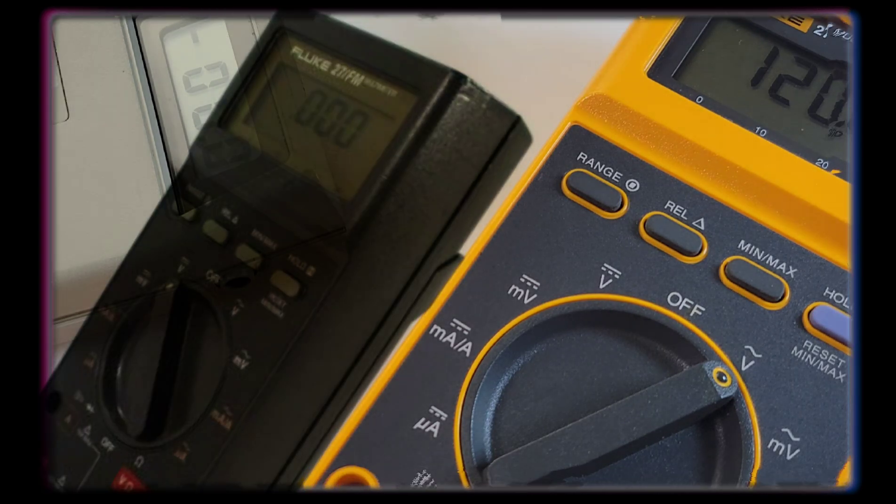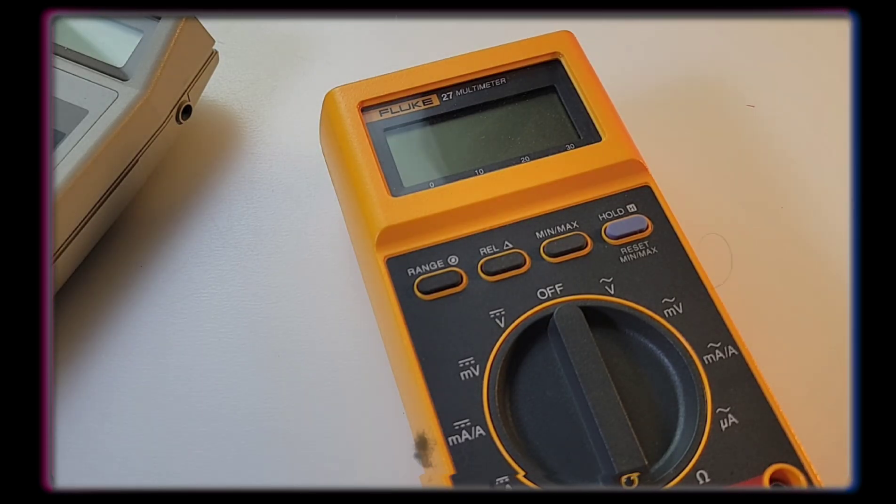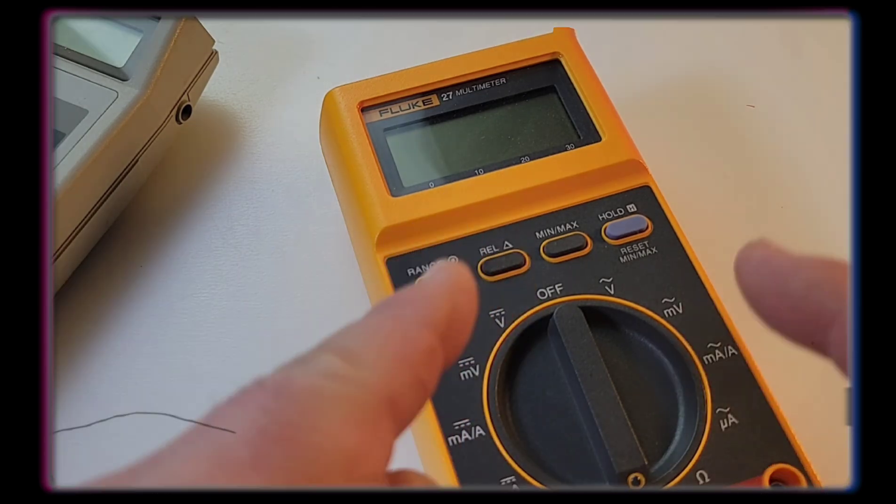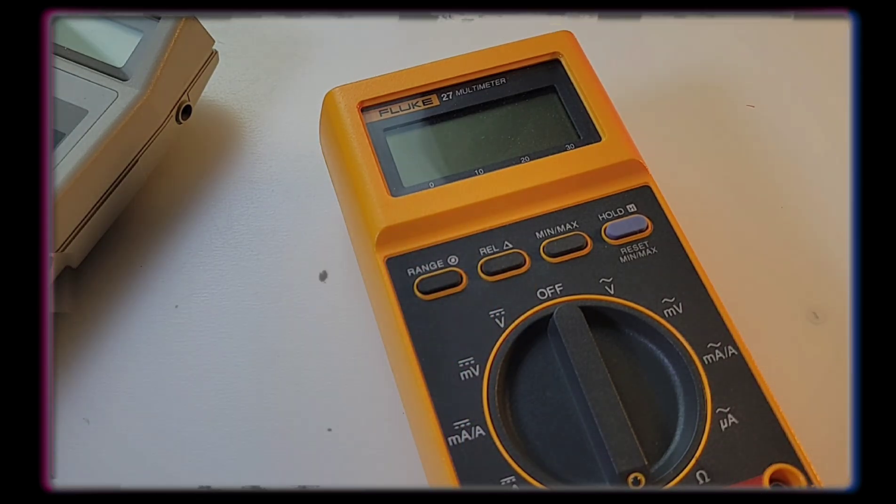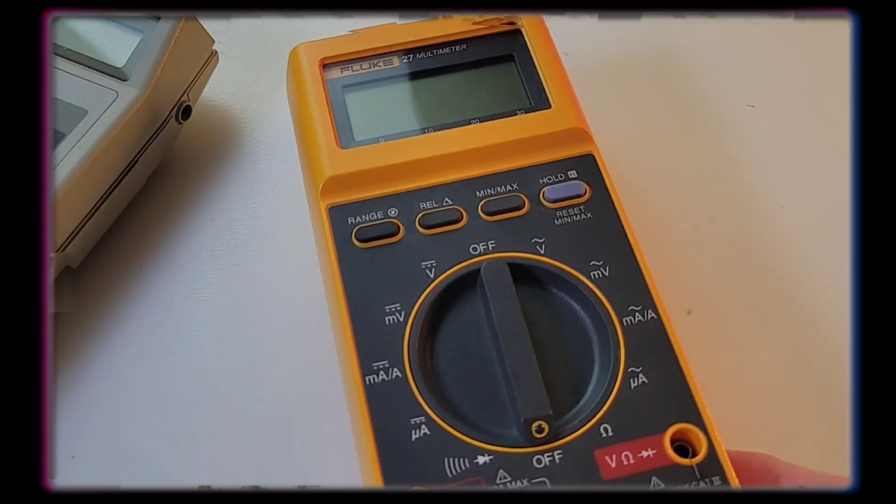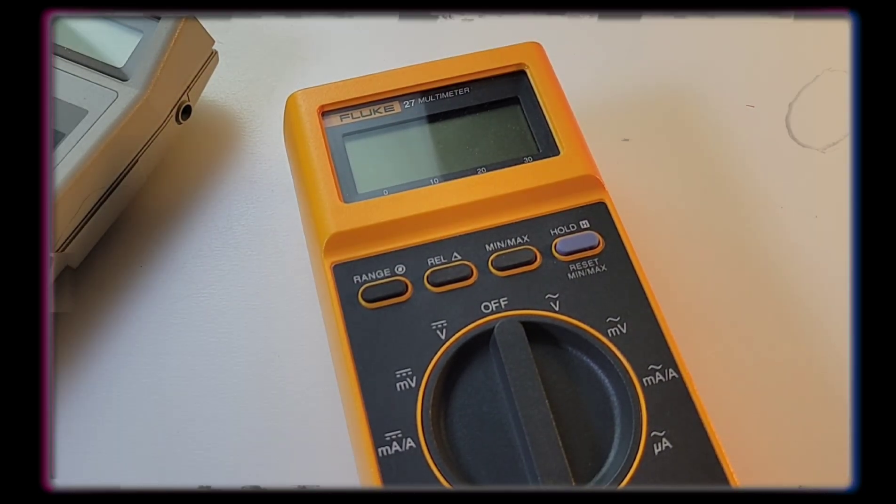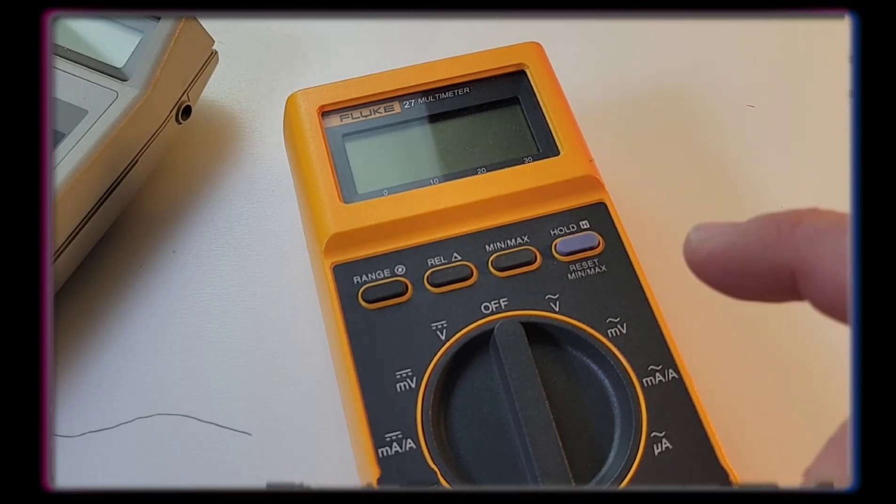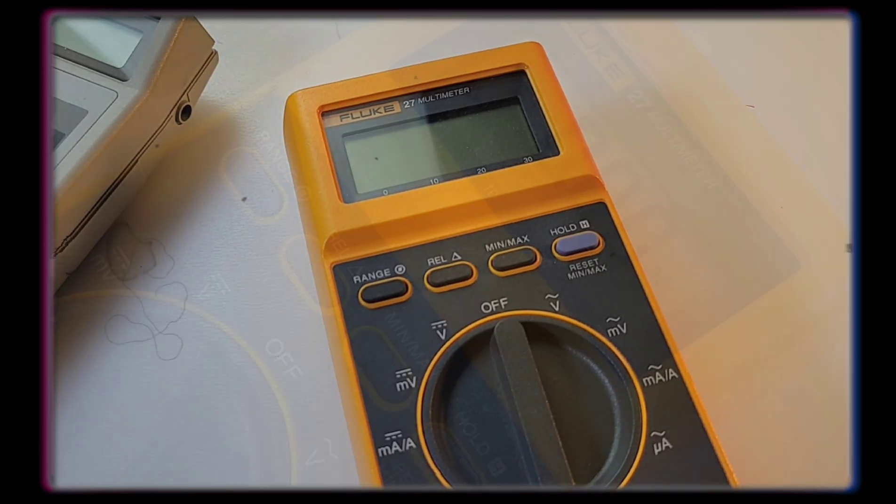So a Fluke 27, not the greatest in terms of specs by today's standards. 3200 count, 31 segment analog bar graph. Does resistance, does diode, does continuity. It does boast EMI shielding. Oh yes, you know, we love our shielding. And it does have O-ring seals because this was always considered a real workhorse, a meter that was going to be used and abused out in the field.